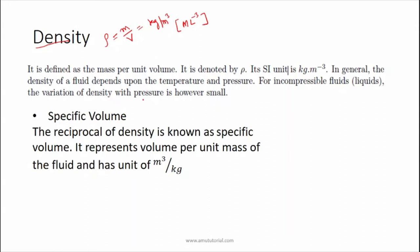Another important property is specific volume. Specific volume is the inverse of density and its SI unit is meter cube per kg. It is defined as the volume per unit mass of a fluid.